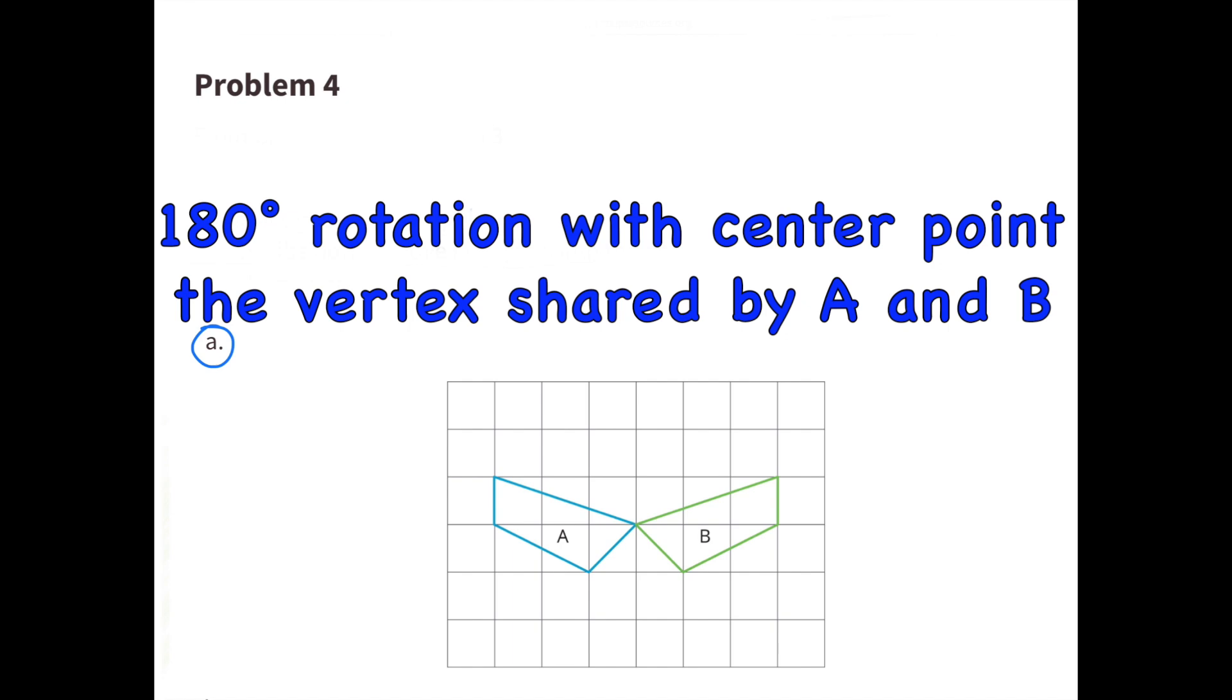(a) 180-degree rotation with center point at the vertex shared by A and B. Another transformation could be a reflection across the vertical line that runs through the vertex shared by Figure A and Figure B.